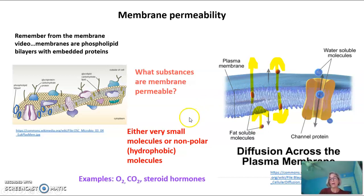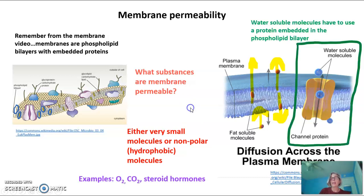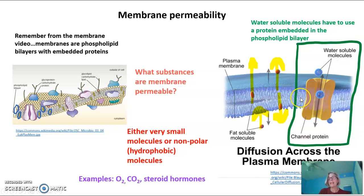Examples of these include oxygen, carbon dioxide, and steroid hormones. Water-soluble molecules have to use a protein embedded in the phospholipid bilayer in order to cross, because they can't get through this layer of fatty acids — they're water-soluble, not lipid-soluble.